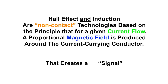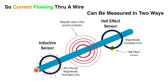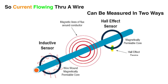Hall effect and induction are both non-contact technologies, based on the principle that for a given current flow a proportional magnetic field is produced around the current-carrying conductor. This creates a signal that is proportional to current, which is then amplified, measured, and displayed as a waveform. Current flowing through a wire can be measured in two ways: either with an inductive sensor or with a Hall effect. The inductive sensor is for our secondary waveform and the Hall effect creates our primary waveform.